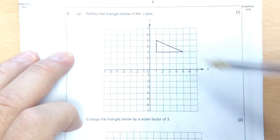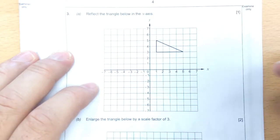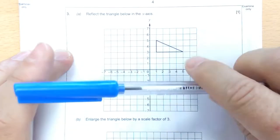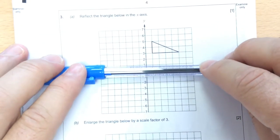Question 3. Reflect the triangle below in the X axis. It clearly indicates there you can see X. So that's the X axis, that line going across.